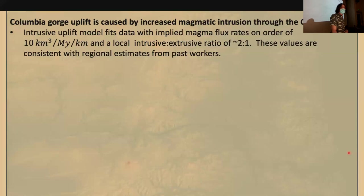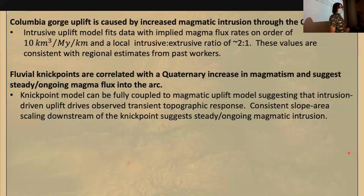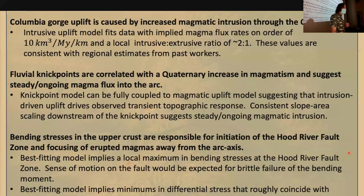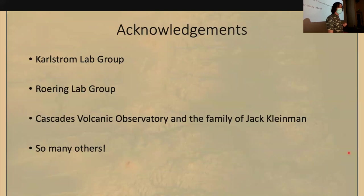In summary: I've argued that the Columbia Gorge uplift is caused by increased magma intrusion through the Quaternary. I've also argued that fluvial nick points are correlated with the Quaternary increase in magmatism, suggesting a steady, ongoing magma flux into the arc. And I've argued that bending stresses in the upper crust are responsible for initiation of the Hood River Fault Zone, as well as the focusing of erupted magmas away from the arc axis. This was partially funded by the Cascades Volcanic Observatory and the Kleinman Memorial Grant. Thanks to the entire Karlstrom lab group, the lab group of Josh Roering, and of course to everyone here.